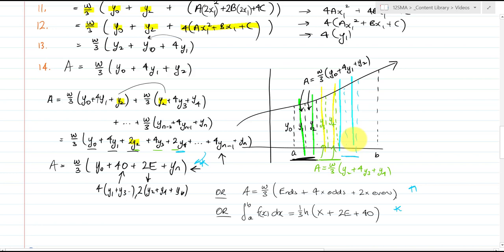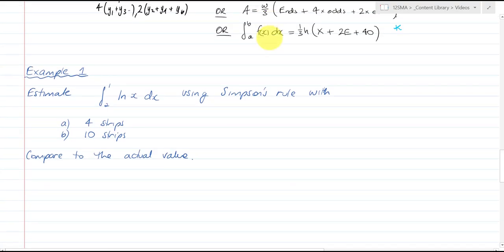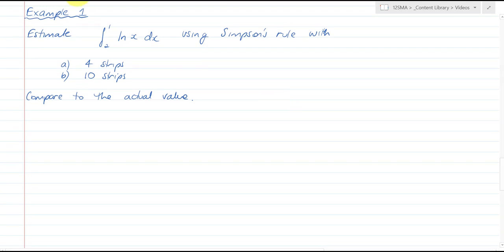So we have to do it with 2 strips, or 4 strips, or 6 strips. We can't do it with 5 strips. Simpson's rule doesn't work with an odd number of strips, only an even. Trapezoidal works with an odd number of strips, but not Simpson's rule.